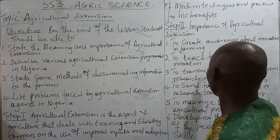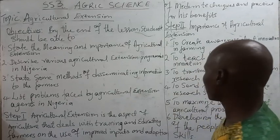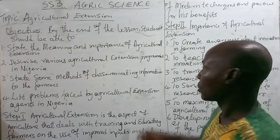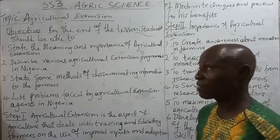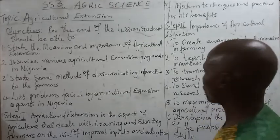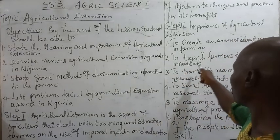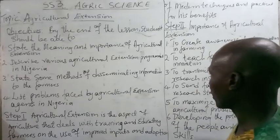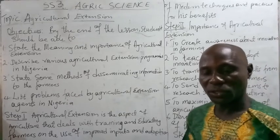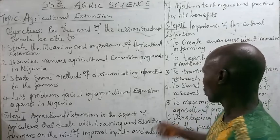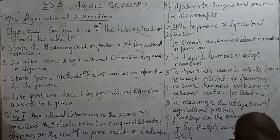The importance of agricultural extension: one, to create awareness about innovation in farming — going by our definition, we are trying to teach rural farmers new methods of farming. Two, to teach farmers to adopt innovation. Three, to convince the farmers about new innovations so that they can practice them. Four, to transmit research results from research institutes to farmers.